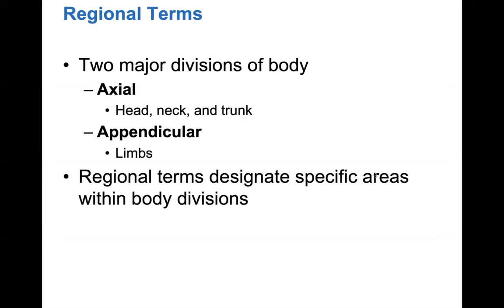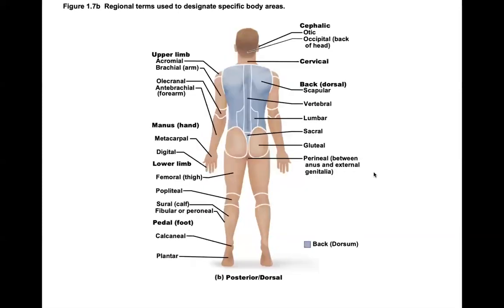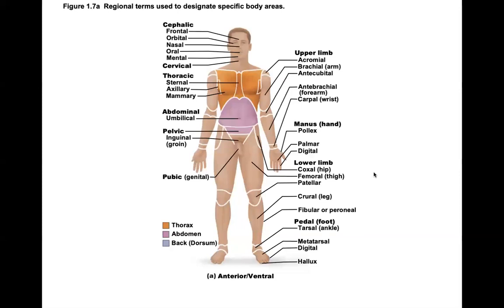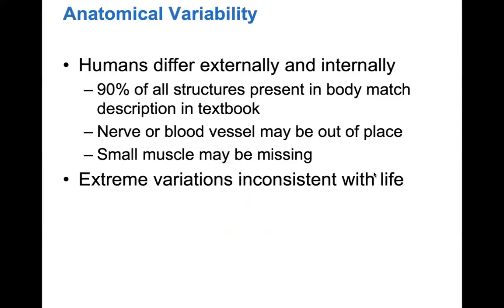There are two major divisions of the body: axial, which includes the head, neck, and trunk; and appendicular, which refers to the appendages — your limbs. Regional terms designate specific areas within these body divisions. Note that humans differ externally and internally — about 90% of structures match textbook descriptions, but nerves and blood vessels may be out of place, and small muscles might be missing or in different locations. Extreme variations might be inconsistent with life.